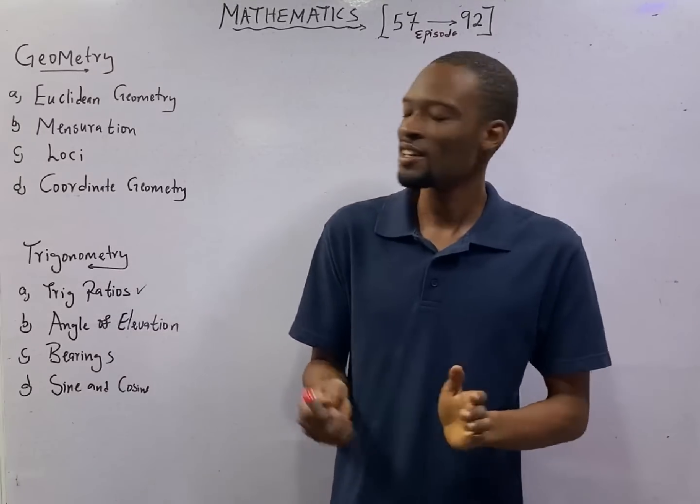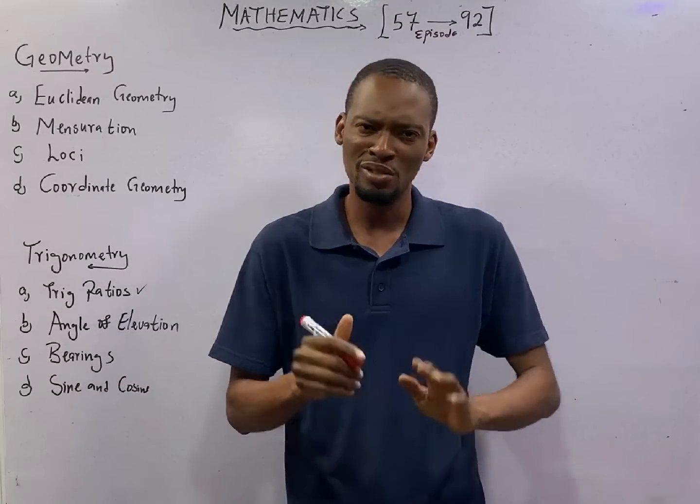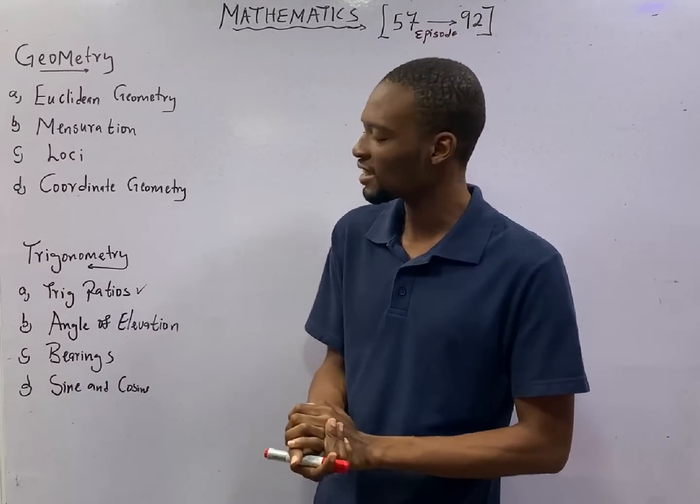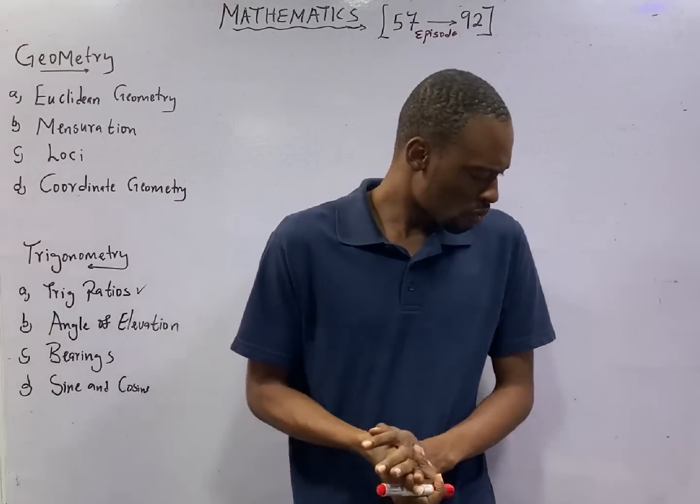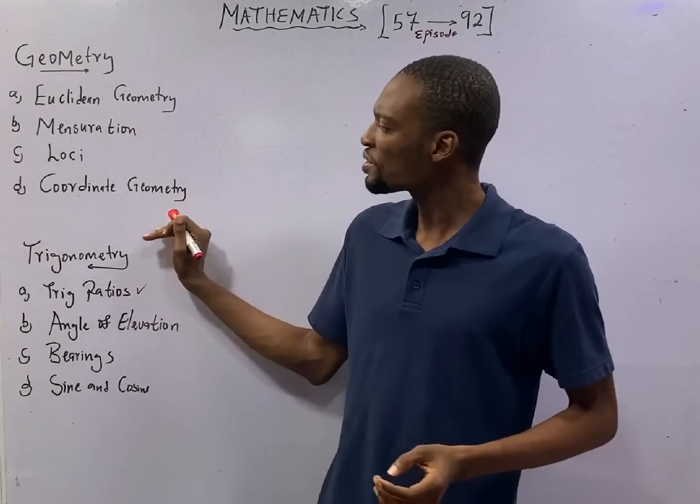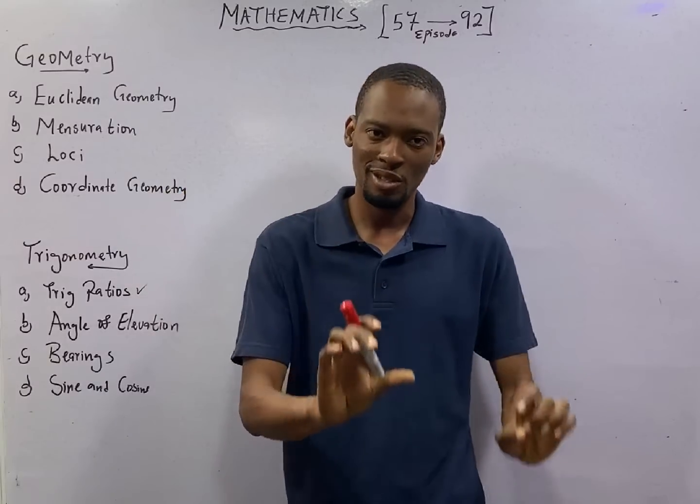This is episode number 68 of the 120 Days to JAMB Mathematics with Flash Isaac. In this episode, we are still answering questions under geometry and trigonometry.